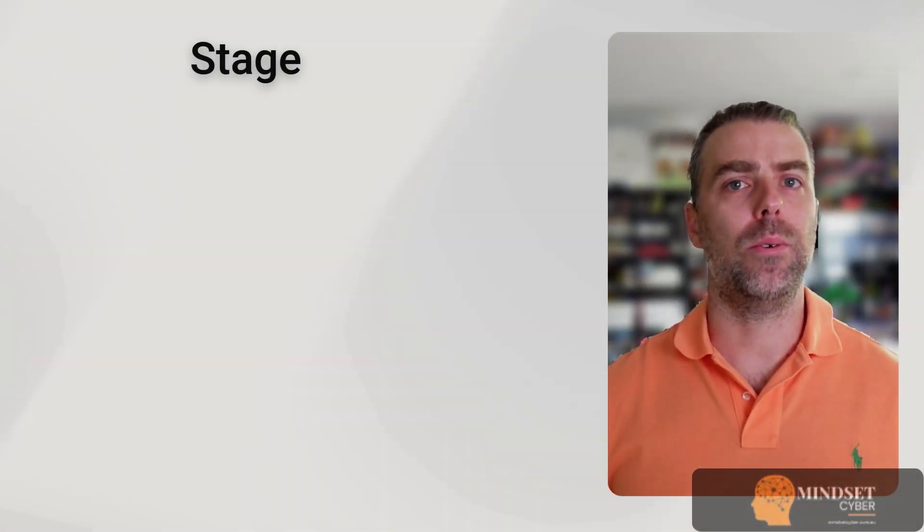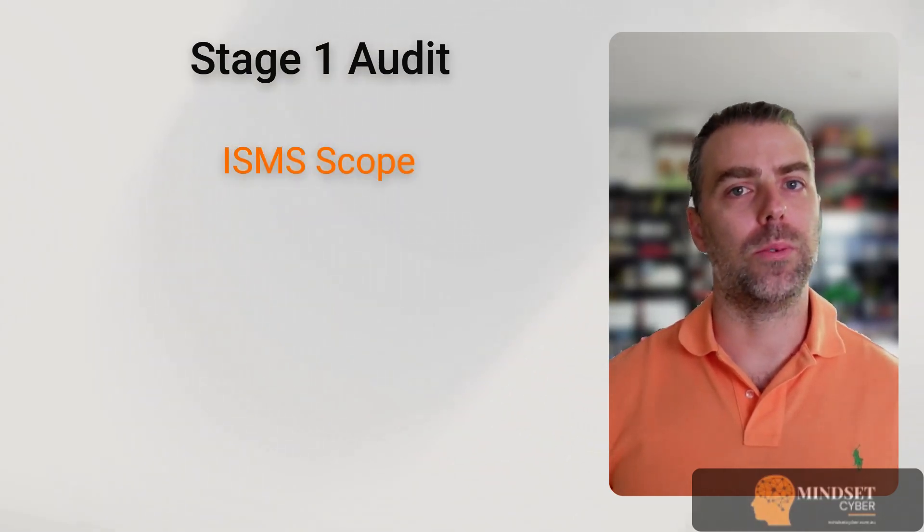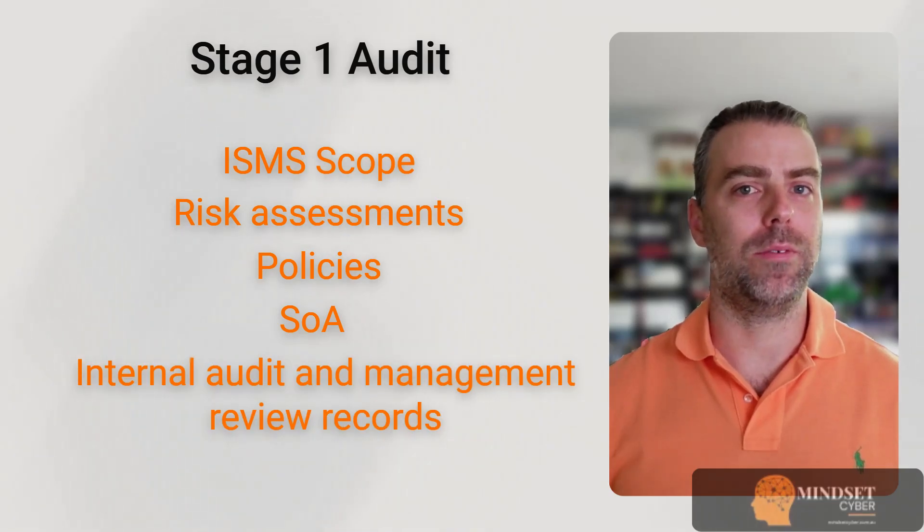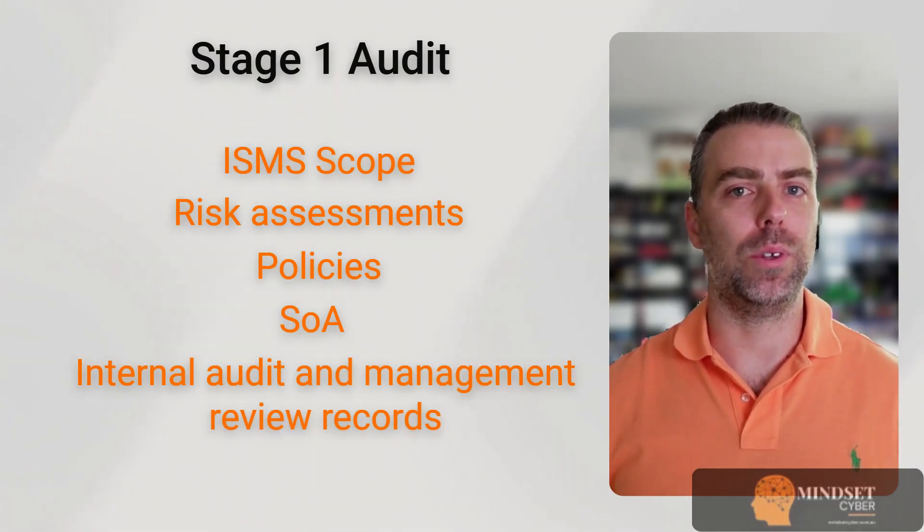You'll need to prepare for the Stage 1 audit, which is a documentation review. The auditor will want to see your ISMS scope, your risk assessments, your policies, your statement of applicability, and your internal audit and management review records. This confirms you're ready for the full audit. In Stage 2, the auditor will test your ISMS in practice — conducting interviews, evidence checks, and reviewing how controls are operating across the organisation. Once certified, you'll need to keep your ISMS up to date. Certifications last three years, but you'll have surveillance audits every 12 months to make sure your documentation stays current.